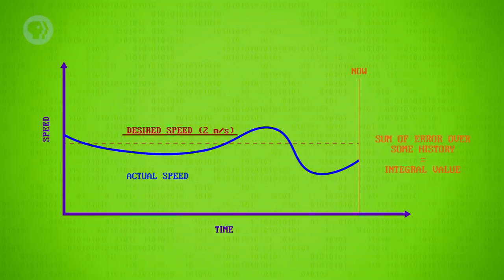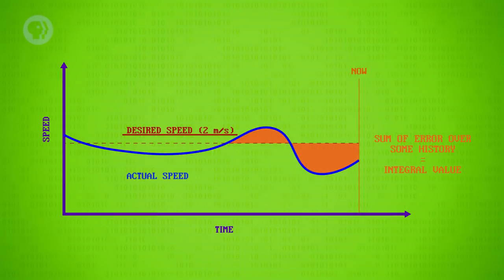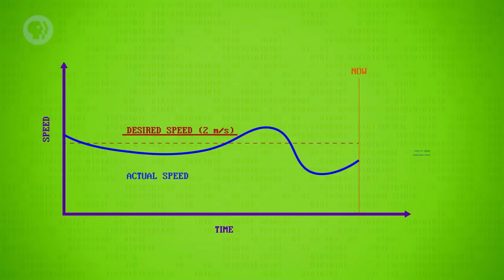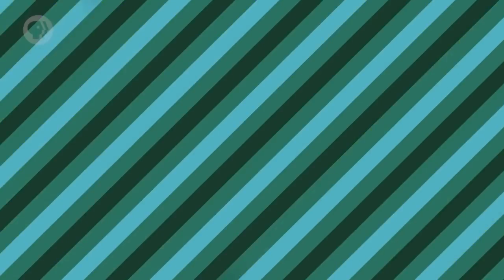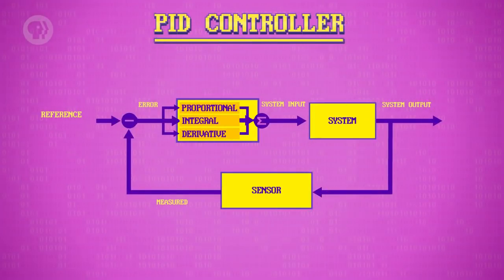Next, the integral value is computed, which is the sum of error over a window of time, like the last few seconds. This look-back helps compensate for steady-state errors, resulting from things like motoring up a long hill. If the value is large, it means proportional control is not enough, and we have to push harder still. Finally, there's the derivative value, which is the rate of change between the desired and actual values. This helps account for possible future error, and is sometimes called anticipatory control. For example, if you're screaming in towards your goal too fast, you'll need to ease up a little to prevent overshoot. These three values are summed together with different relative weights to produce a controller output that's passed to the system.